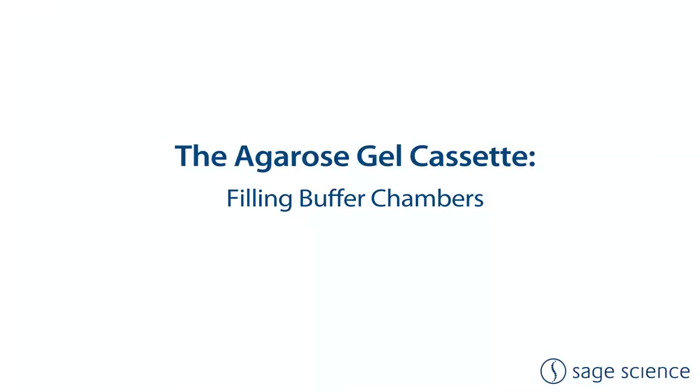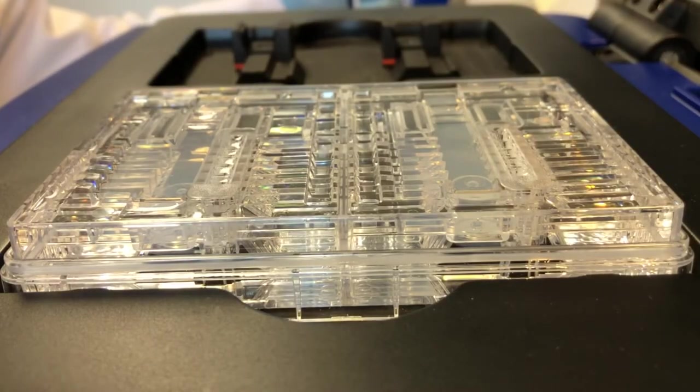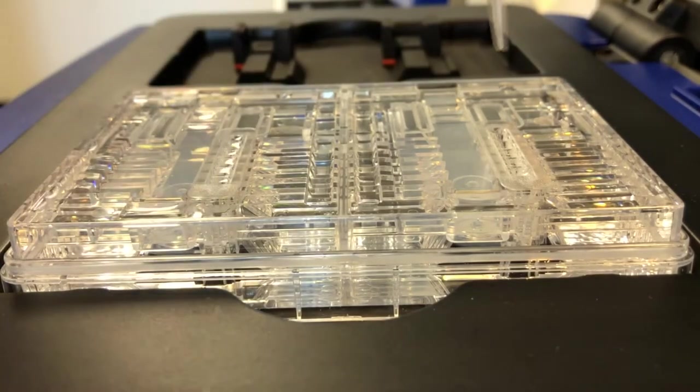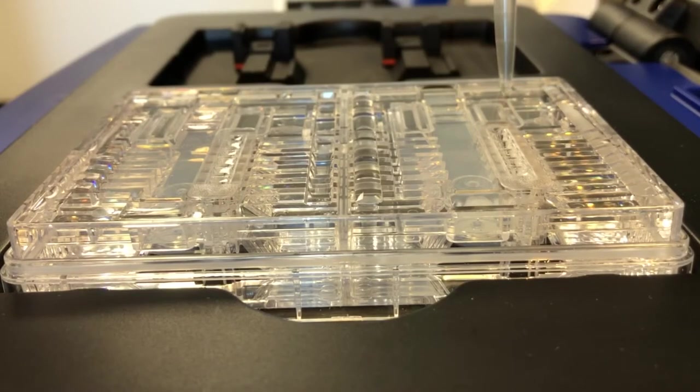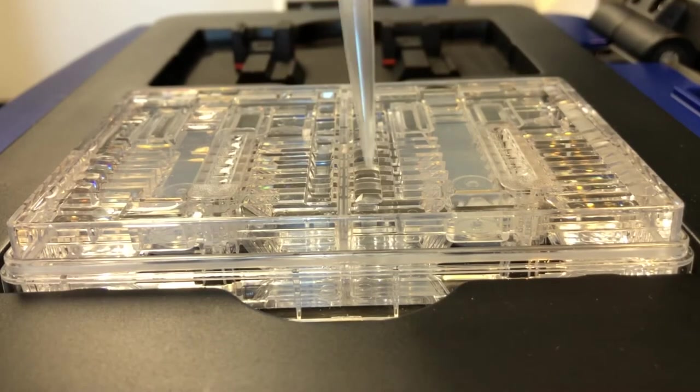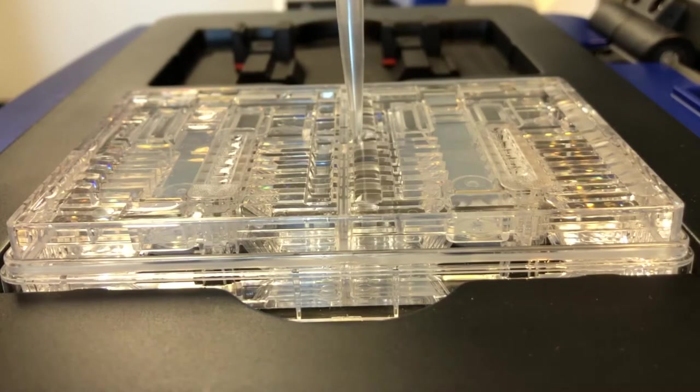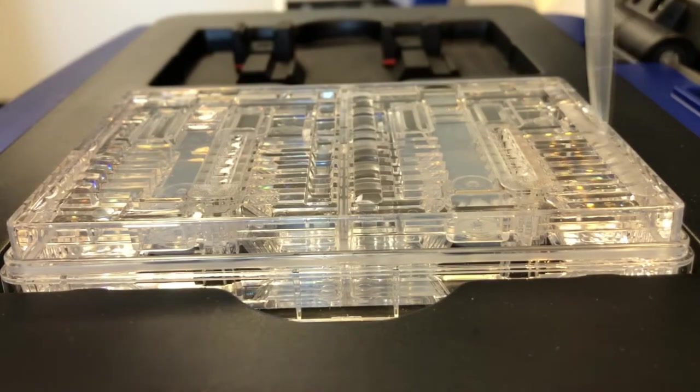The electrophoresis buffer reservoir is continuous all the way around the gel channel. It should be filled right up to the level of the cassette surface. The hydrophobic nature of the cassette plastic makes it difficult to completely fill the elution electrode channels with buffer.